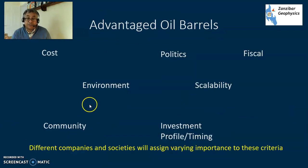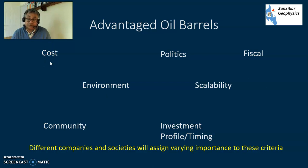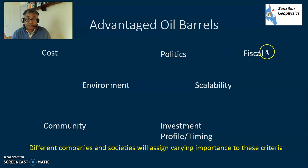Advantage oil barrels come in very many different ways. First of all there's cost - you want cheap oil, cheap capex, cheap opex. Politics - politically stable. Fiscal - a stable tax regime.